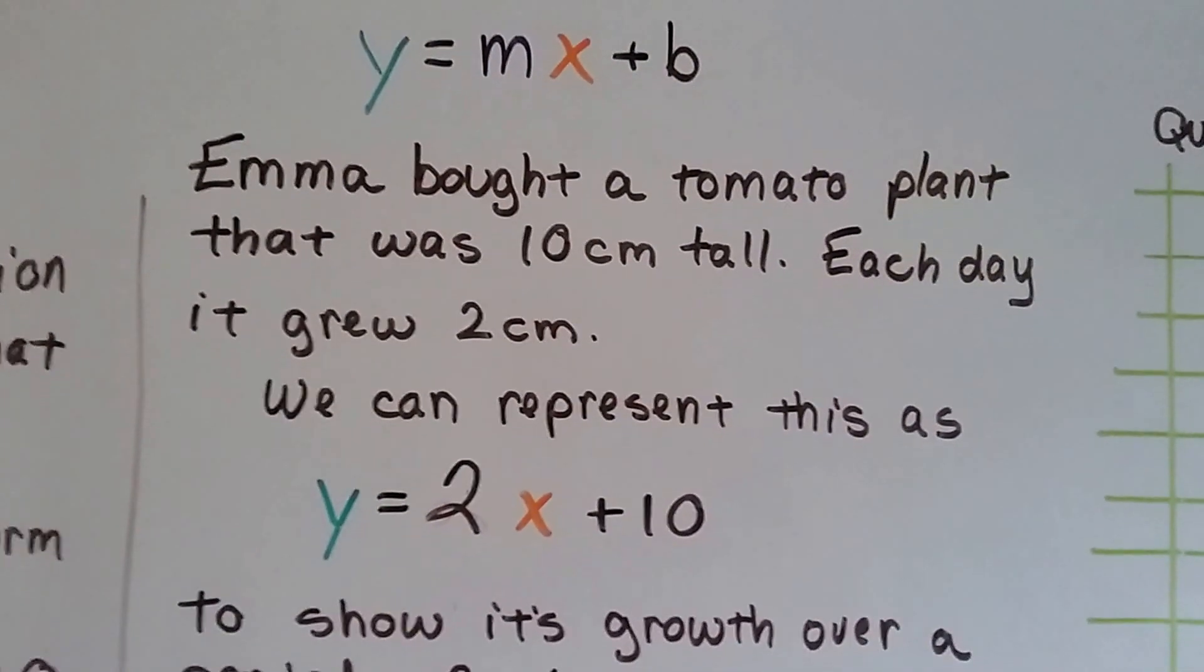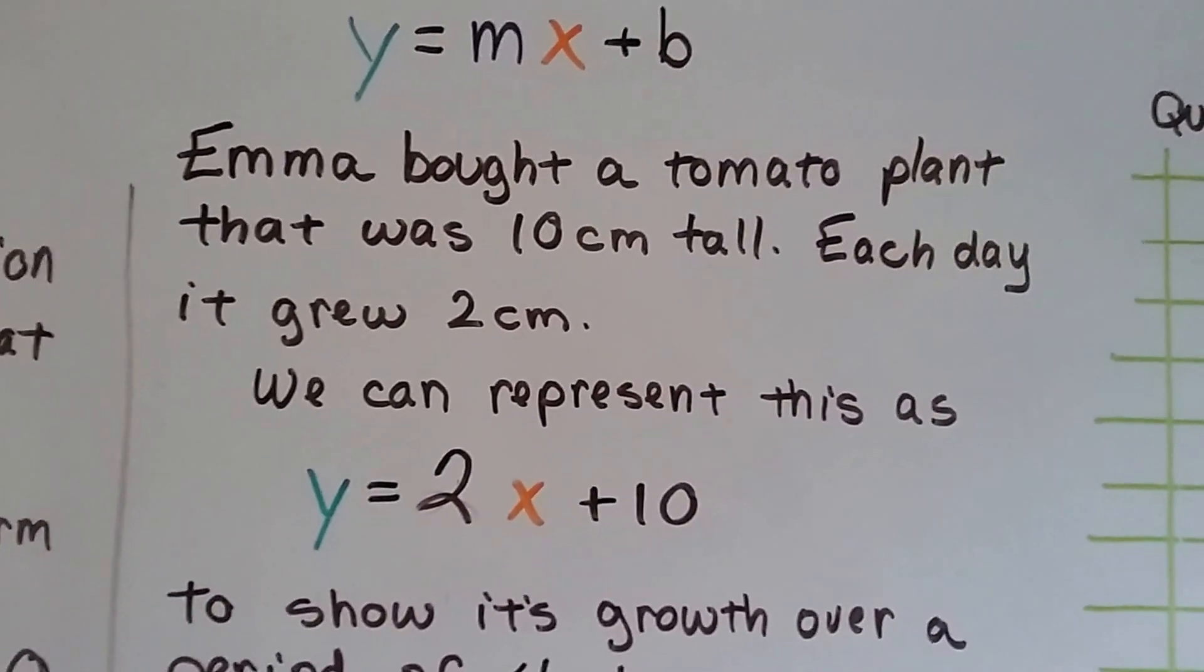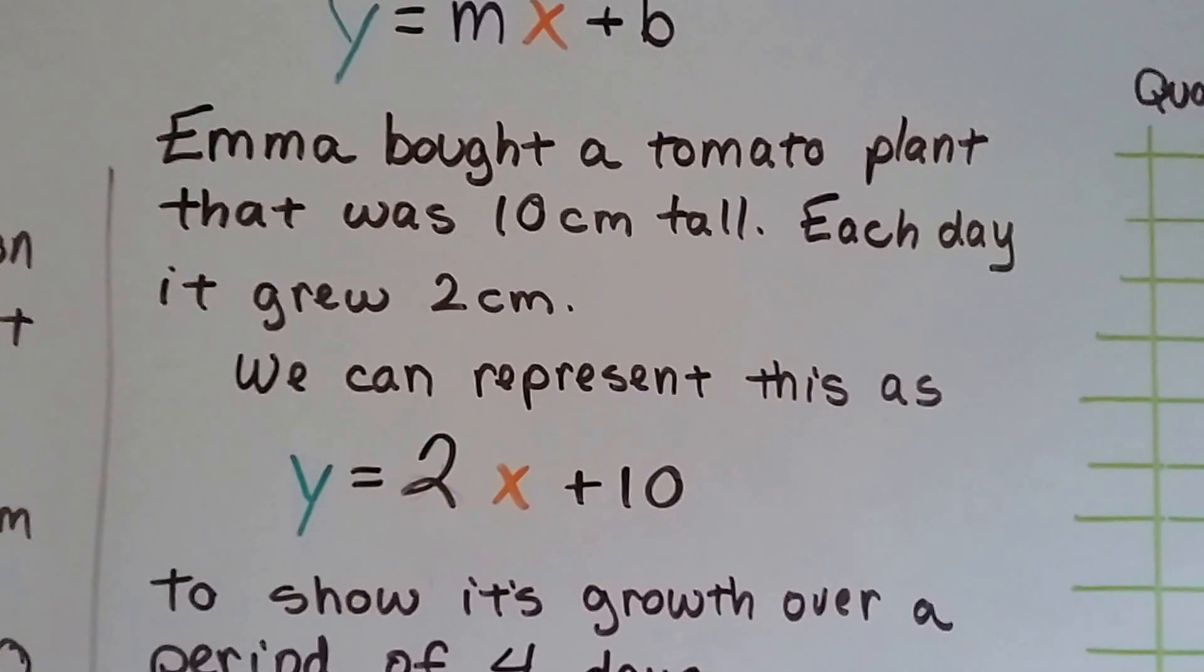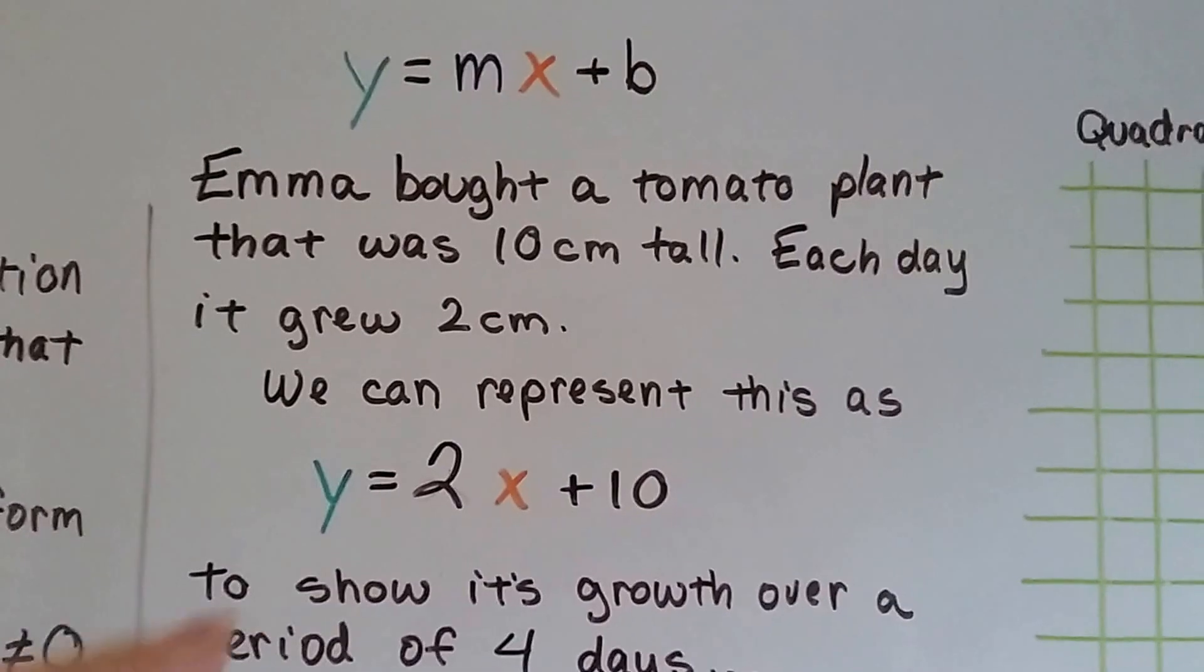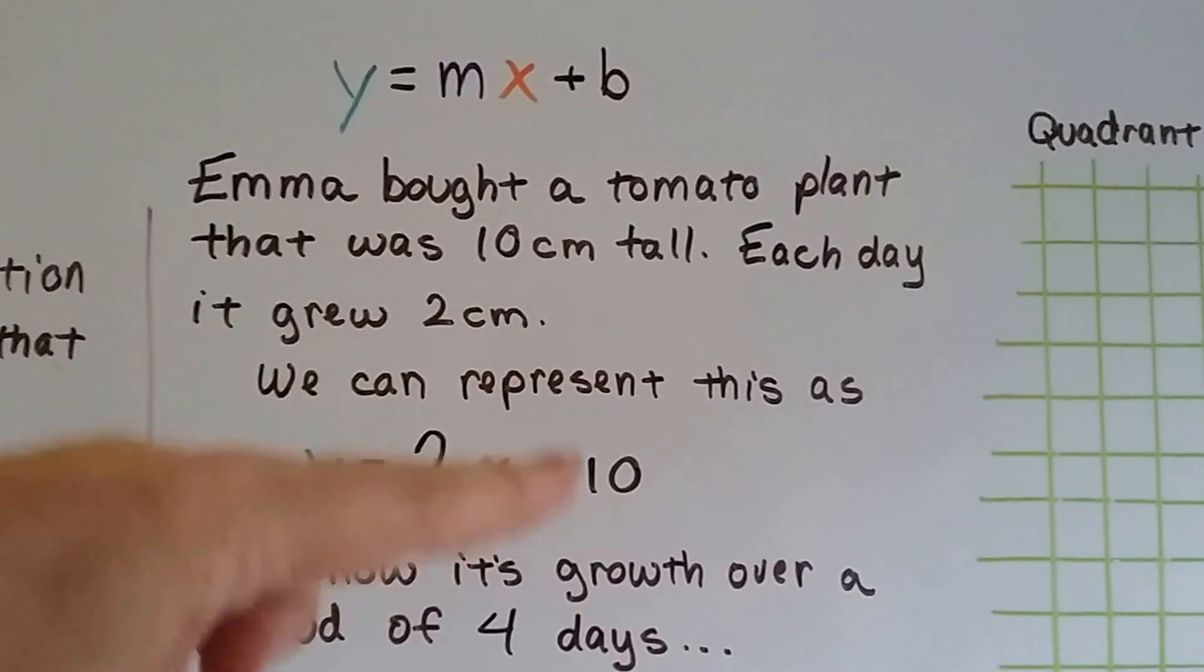This is the problem we used in the last video. Emma bought a tomato plant that was 10 centimeters tall, and each day it grew 2 centimeters. You can see how it lines up with this equation.